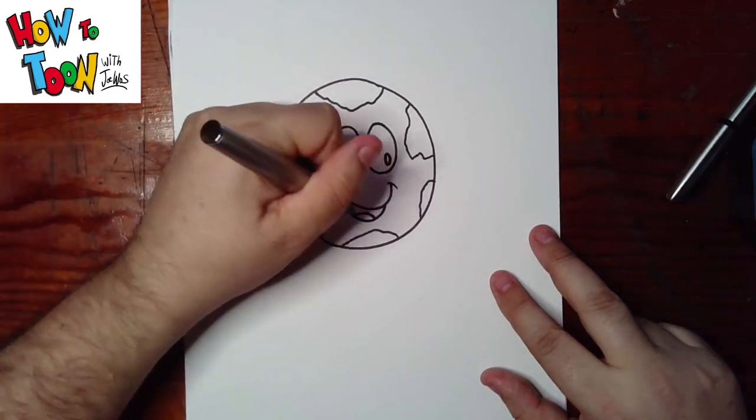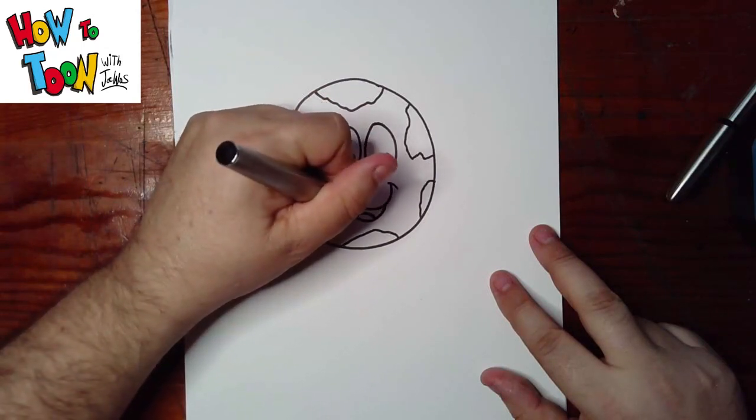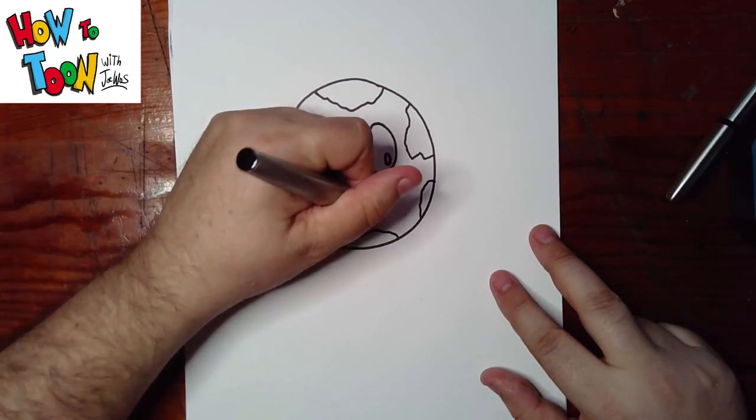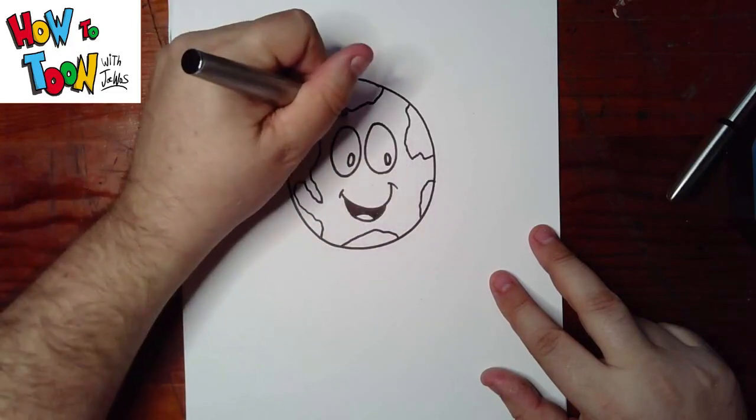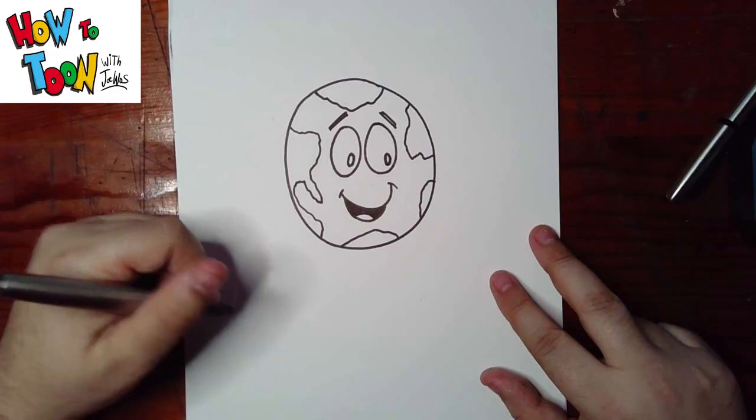Let me see the tongue in here, and then shade in above that. Eyebrows. Okay, so that's our basic Earth.